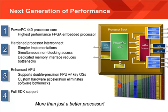The 440 processor core offers the highest performance of any FPGA embedded processor. It also has a hardened processor interconnect structure called the crossbar switch, which enables simpler implementations and simultaneous non-blocking access. The processor also has a dedicated memory interface that reduces bottlenecks on the PLB bus. The 440 has an enhanced APU that supports double precision floating point functions with key operating systems.